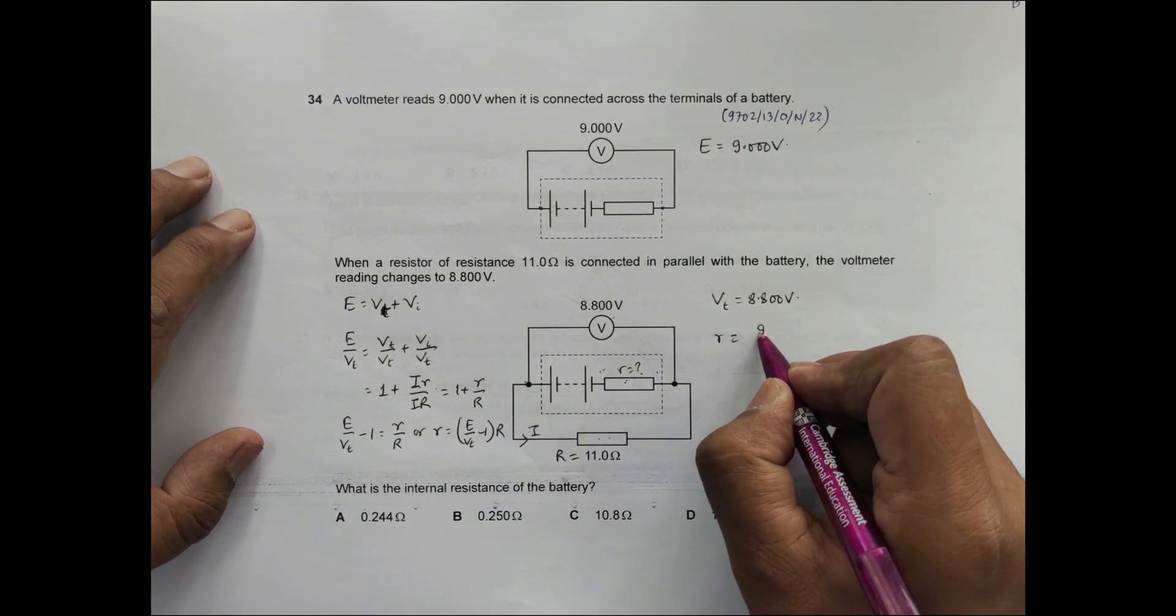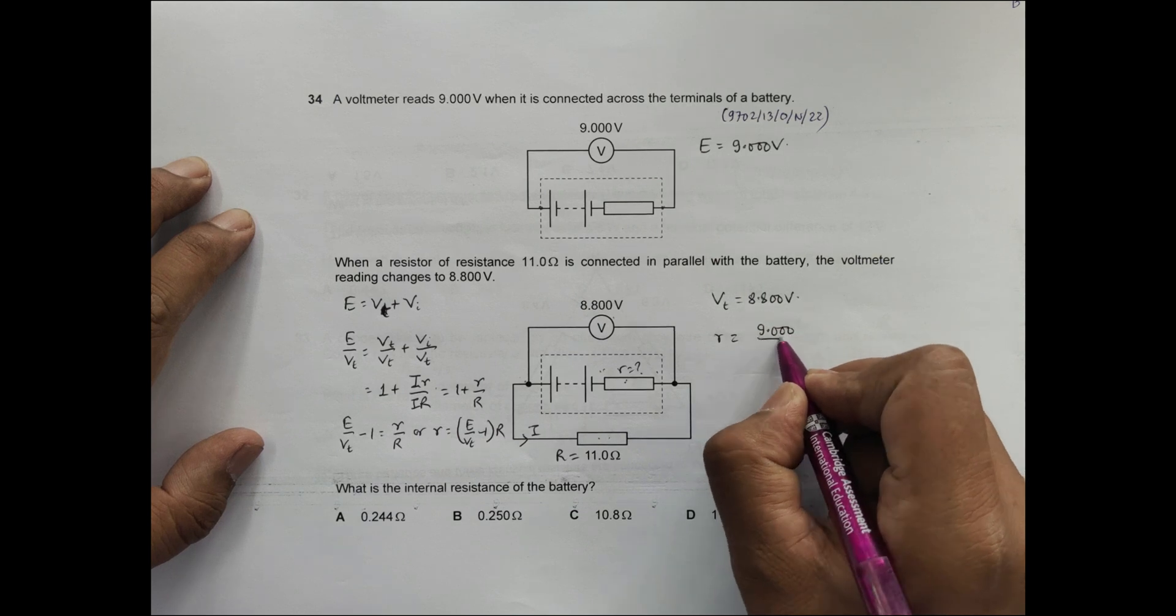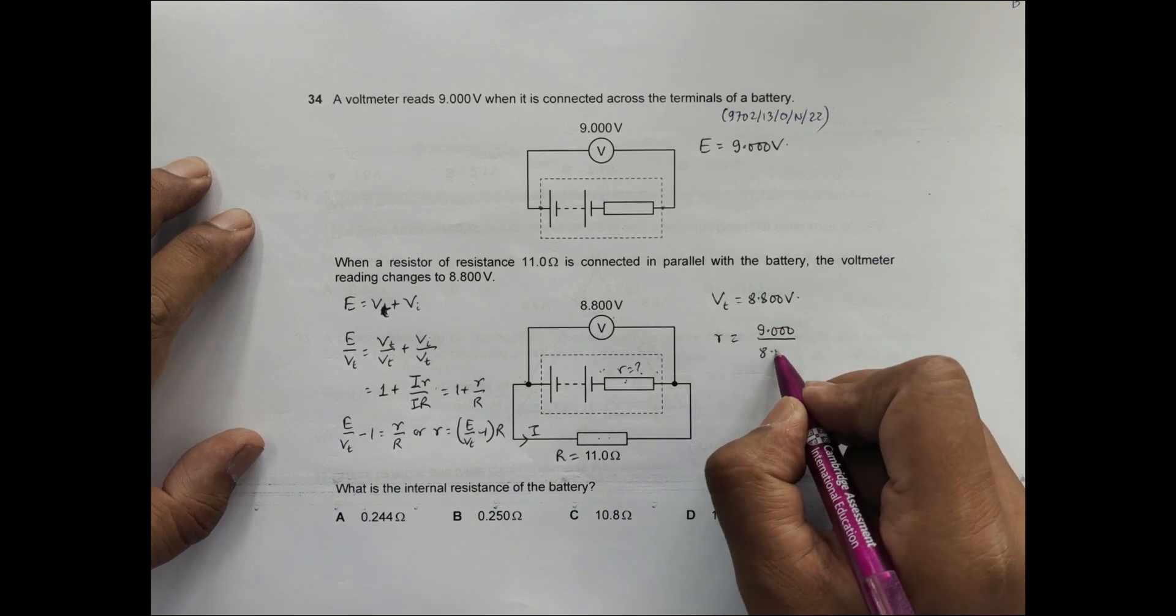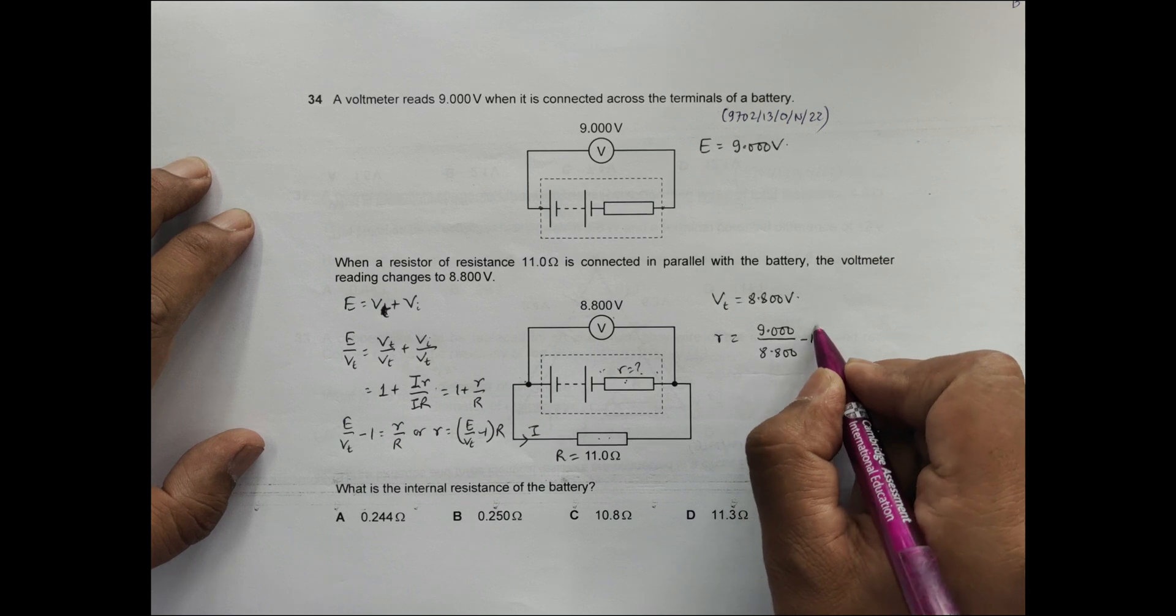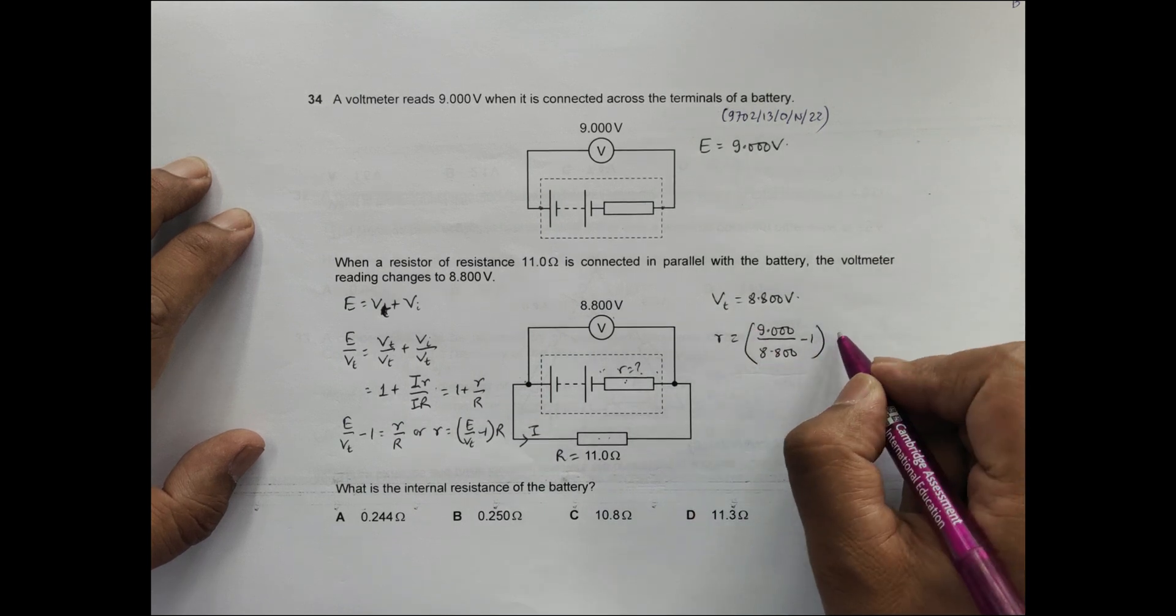Let's apply the formula here. So r will be equal to E is 9.000, V_T is 8.800 minus 1, then R is equal to 11.0.